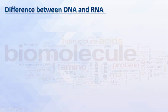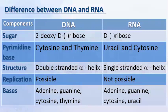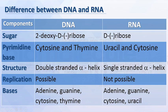Differences between DNA and RNA: based on sugar, DNA has 2-deoxy-D-ribose while RNA has D-ribose. Pyrimidine bases in DNA are cytosine and thymine; in RNA they are uracil and cytosine. DNA has a double-stranded helix structure; RNA is single-stranded. Replication is possible in DNA but not in RNA. Bases in DNA are adenine, guanine, cytosine, and thymine; in RNA they are adenine, guanine, cytosine, and uracil.